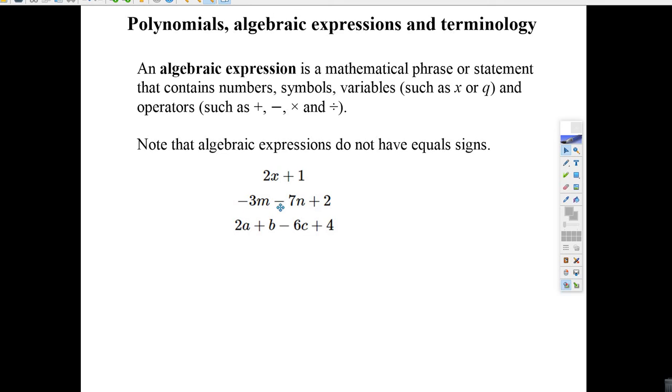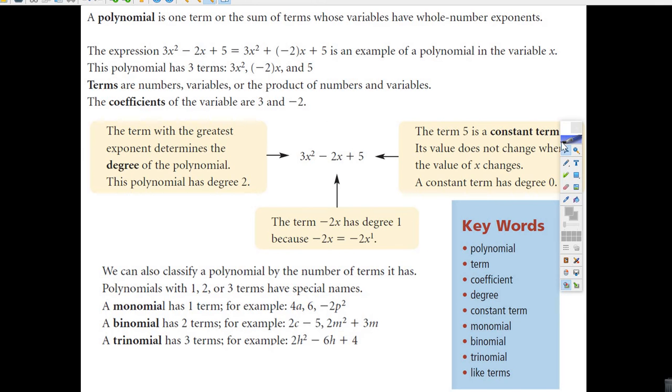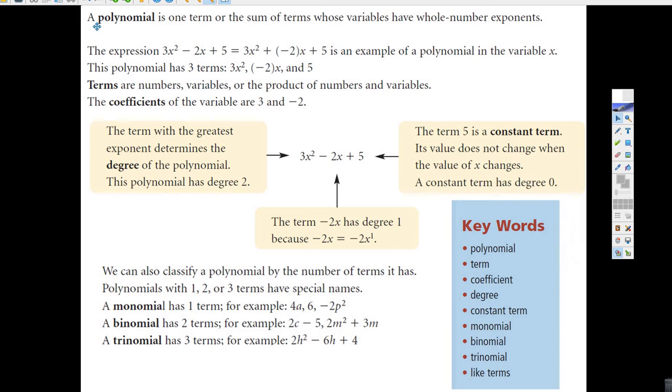So minus 3m minus 7m plus 2, that's an algebraic expression. We're going to learn a little bit more about some of the names that go with it. We have these very nice notes from a lovely Canadian textbook, a Pearson textbook that we're using.